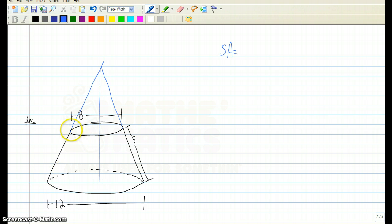We'll draw in the radius for the top circle, the radius for the bottom circle, and this gives us a cross-section of what this cone originally looked like.